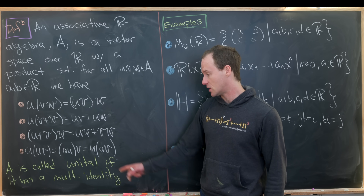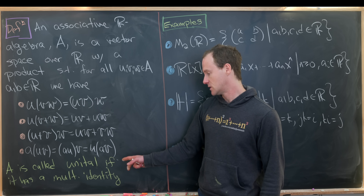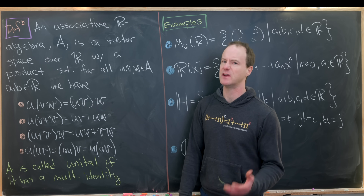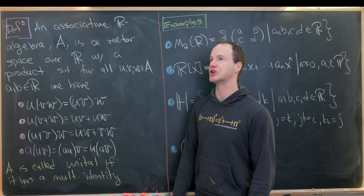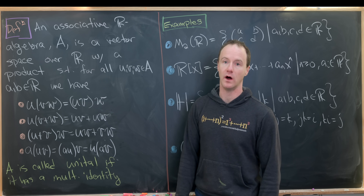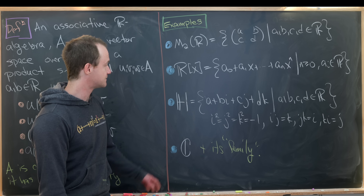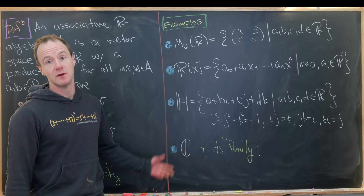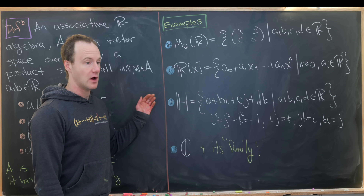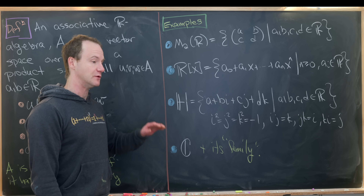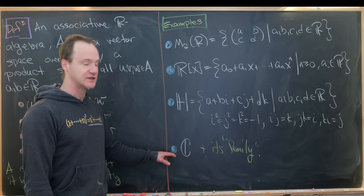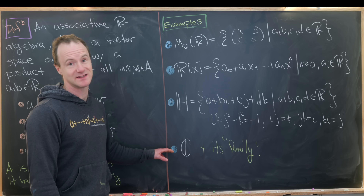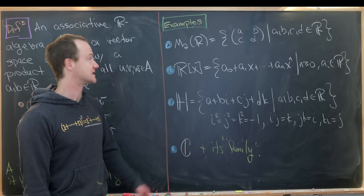Furthermore, A is called unital if it has a multiplicative identity, which we will generally call one. Let's look at some examples. I've got four examples here, although as we move forward, we'll really just look at the family around the last example.